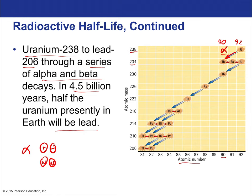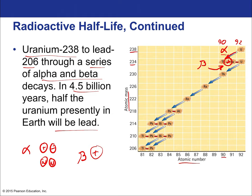In beta decay on the decay chain chart, the atomic mass stays unchanged while the atomic number increases by one — because a neutron became a proton. So beta decay moves to the right on a chart (atomic number up by one, same row), while alpha decay moves left and down (atomic number down two, atomic mass down four). For example: thorium-234 undergoes beta decay to become protactinium-234.